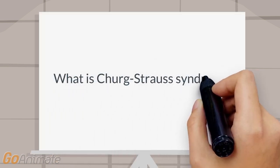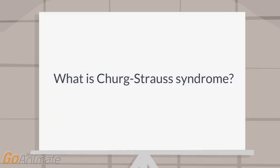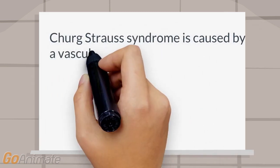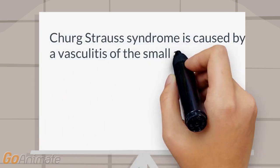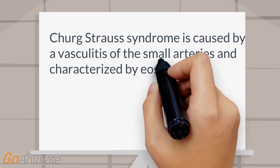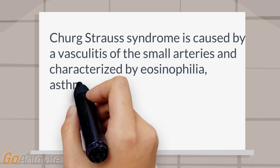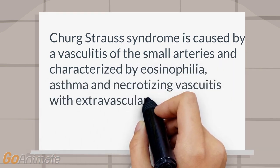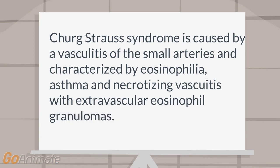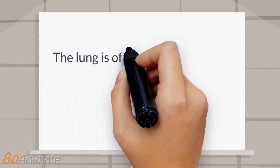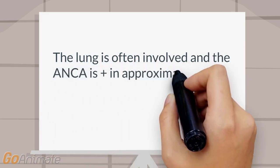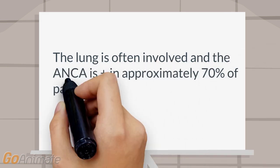What is Churg-Strauss syndrome? Churg-Strauss syndrome is caused by a vasculitis of the small arteries and characterized by eosinophilia, asthma, and necrotizing vasculitis with extravascular eosinophil granulomas. The lung is often involved and the ANCA is positive in approximately 70% of patients.